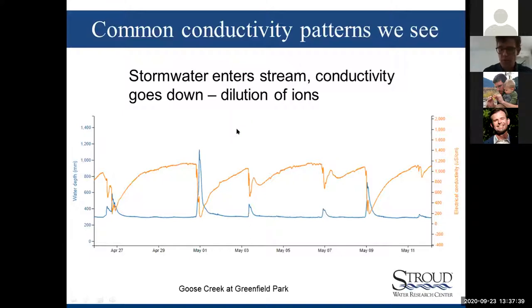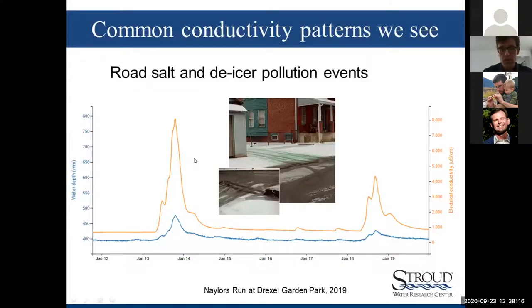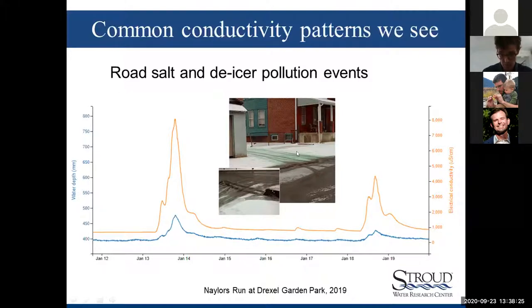One major pattern we see regularly is a dilution pattern where stormwater enters the stream — as depth increases, conductivity drops due to dilution of ion concentration. Storm water has lower conductivity than stream water, so as depth goes up, conductivity goes down, and you can see that pattern repeated throughout the year. The one exception is winter: when salt is applied to roads, it melts ice and that water flows into the storm drain and stream. Instead of dilution, you see conductivity spikes — water goes in and conductivity shoots up due to loads of salt entering the stream.